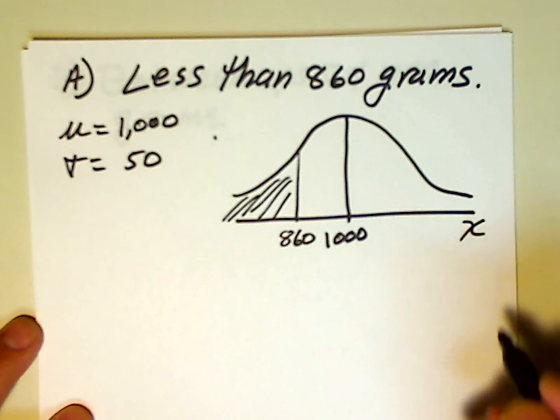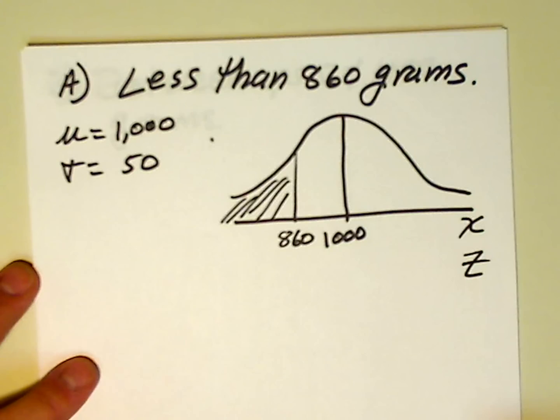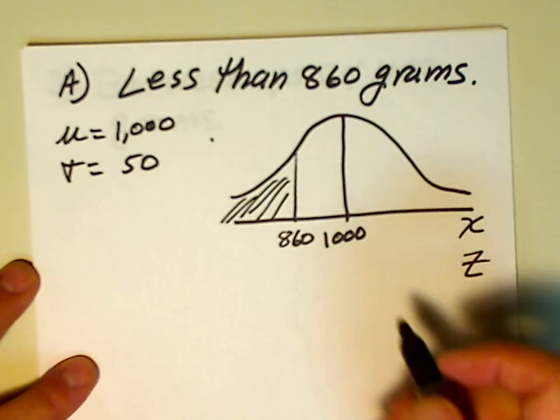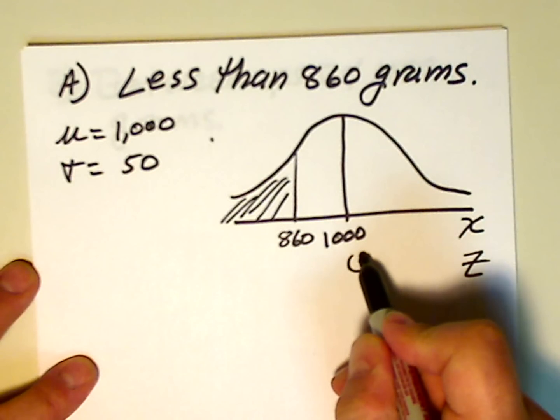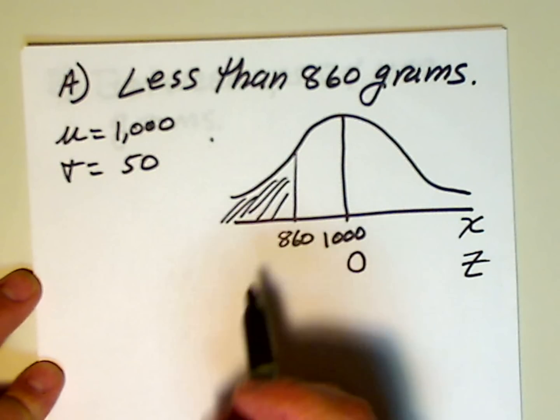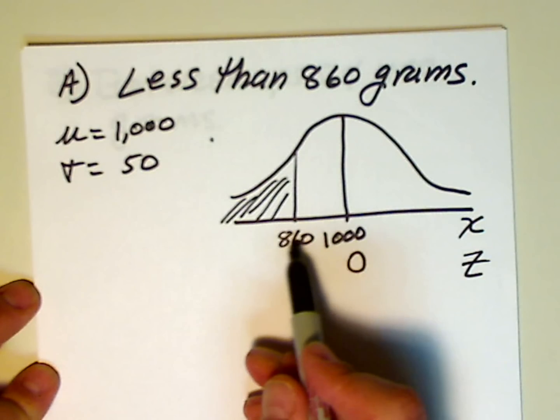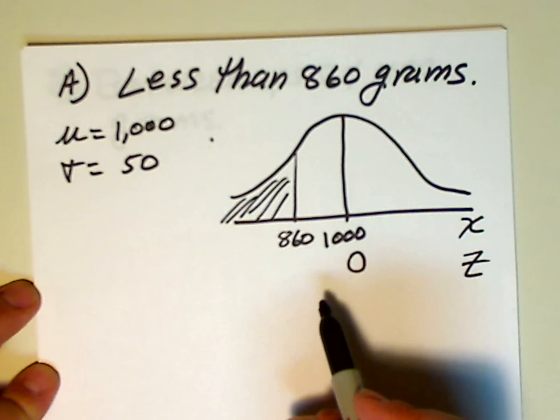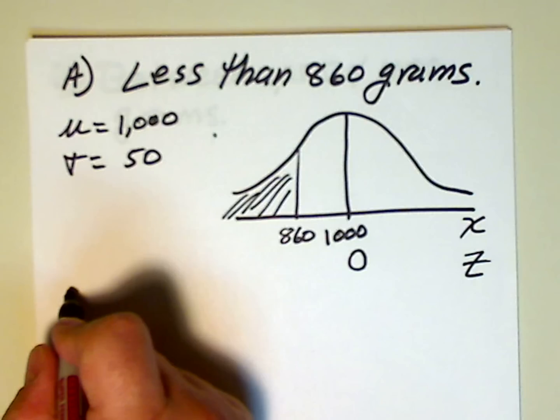These are our x values, and we're going to need to convert, to transform these to z values, the standard normal distribution in order to solve the problem. We know that the mean of the standard normal distribution has a z value of 0. It also has a variance of 1. And now we're going to transform 860 from an x observation to a z unit of standard deviation.